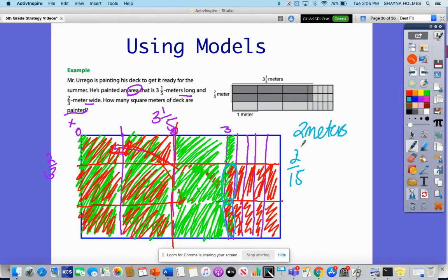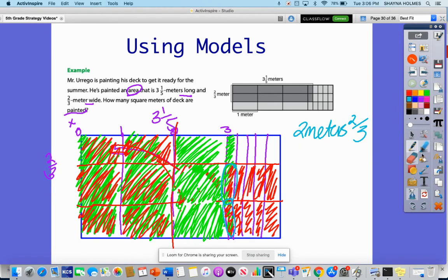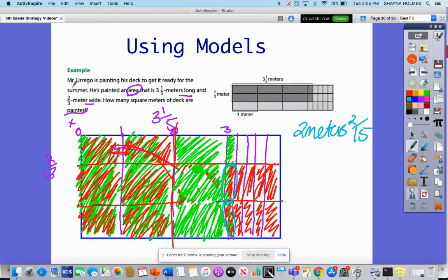That leaves me with 2 2/15 meters. So 3⅕ meters long, ⅔ meters wide, so 2 2/15 square meters have been painted. Moving these pieces out here gives me a better idea of what actually had been painted instead of me having to count up and break all of these into fifths. That is the end of today's math strategy video.